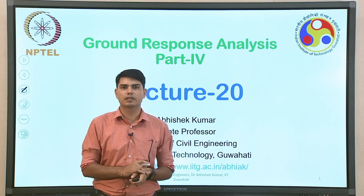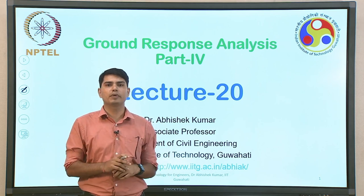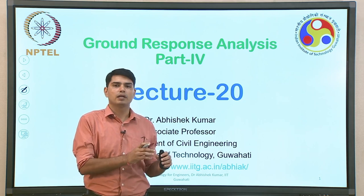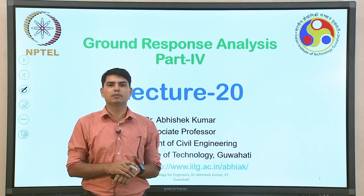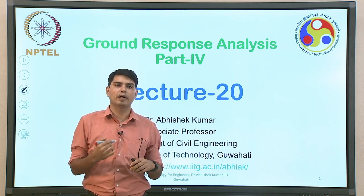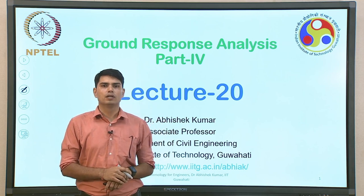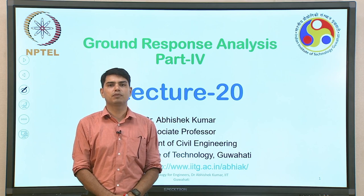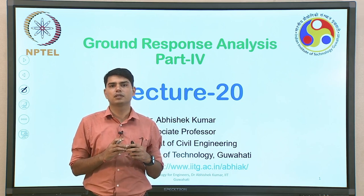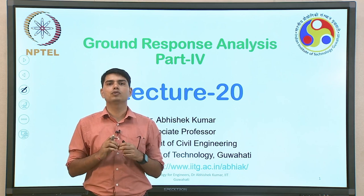The product of the transfer function and the Fourier amplitude of bedrock motion gives the Fourier amplitude at the top of the soil layer of thickness H, yielding the ground motion in the frequency domain at the top of the soil layer. As shown in lecture 19, we convert this ground motion from frequency domain to time domain using inverse fast Fourier transformation. Once done, we take the real part to determine the acceleration time history at the ground surface. In linear analysis, the values of G and damping ratio remain constant throughout the solution.